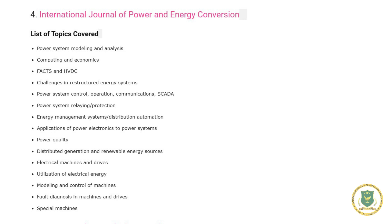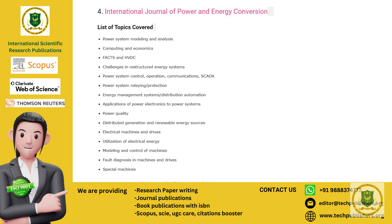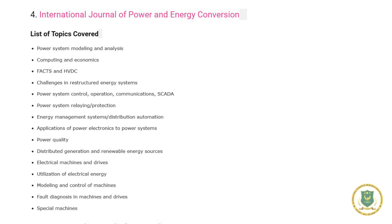Number four: International Journal of Power and Energy Conversion. Topics covered include power system modeling and analysis, computing and economics, FACTS and HVDC, challenges in restructured energy systems, power system control, operation, communications and SCADA, power system relaying or protection, energy management systems or distribution automation, power electronics applications to power systems, power quality, distributed generation and renewable energy sources, electrical machines and drives, utilization of electrical energy, modeling and control of machines, fault diagnosis in machines and drives, and special machines.